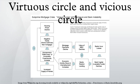The terms virtuous circle and vicious circle refer to complex chains of events which reinforce themselves through a feedback loop. A virtuous circle has favorable results, while a vicious circle has detrimental results.